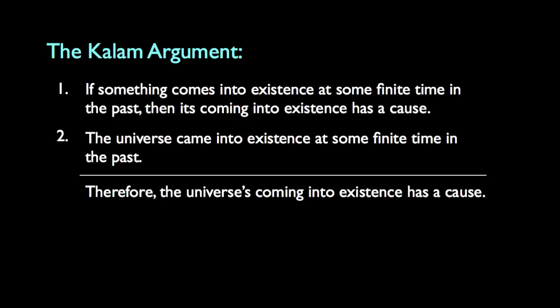The basic argument is pretty simple. If something comes into existence at some finite time in the past, then its coming into existence has a cause. The universe began to exist at some finite time in the past. Therefore, the universe's coming into existence has a cause. If this argument is compelling, then something had to cause the universe to come into existence, and rationality demands we ask what could possibly function as that cause. You need additional argumentation to conclude that this something is the God of Christianity and Judaism and Islam, but this is the crucial first stage of the argument.